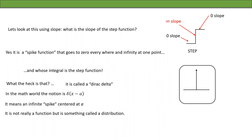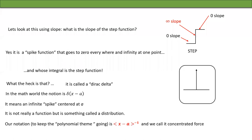The Dirac delta is something called a distribution — I don't want to get into that. In our notation, to keep the polynomial theme going, we write it as ⟨x−a⟩^(−1) and call it a concentrated force or concentrated spike. Please remember: this minus one does NOT mean 1/(x−a). It is just a notation. Whenever you see the angle bracket to the power minus one, you are always thinking spike.